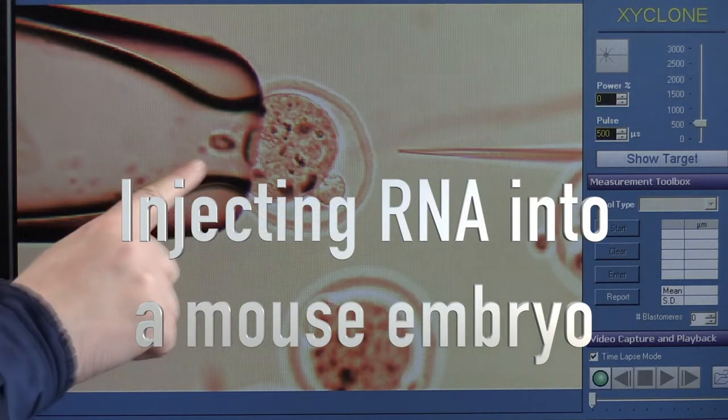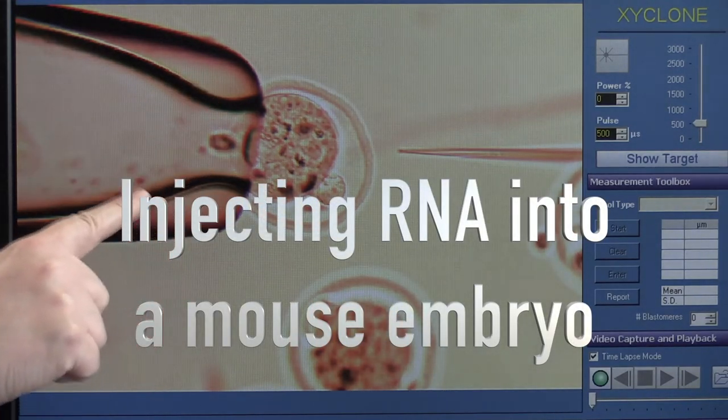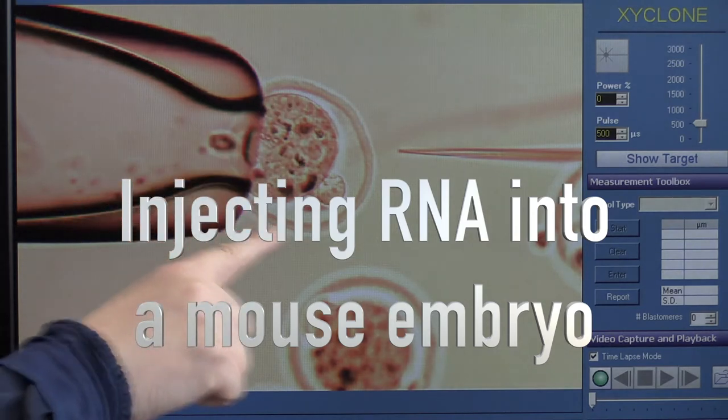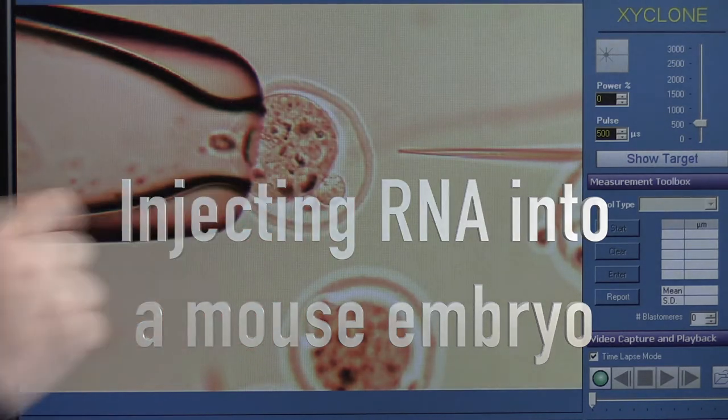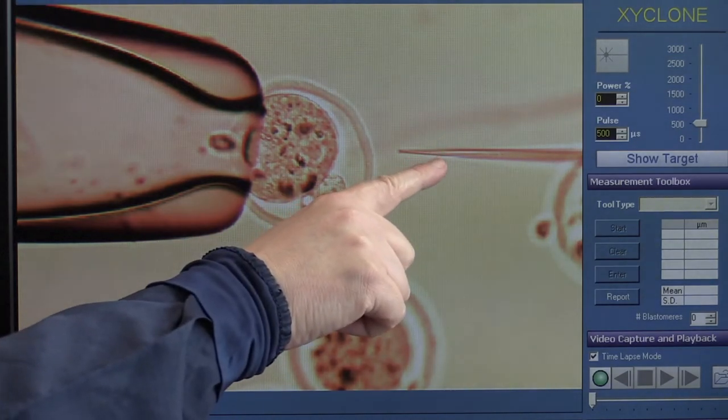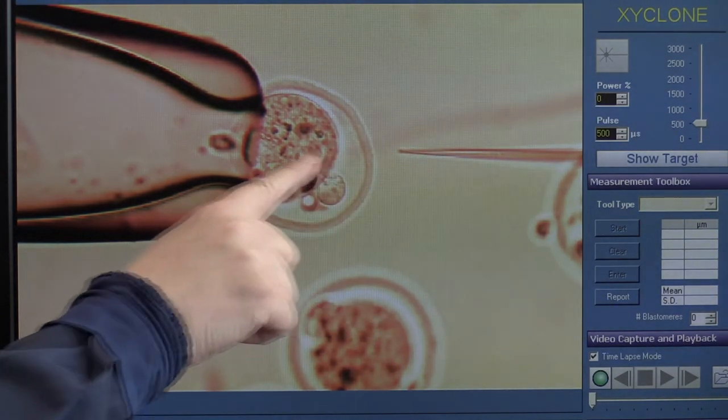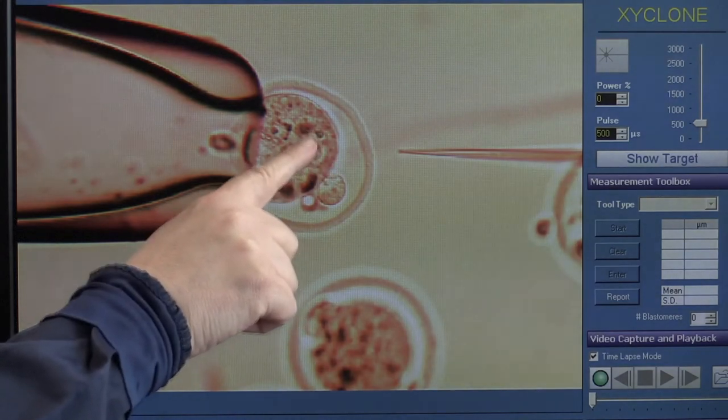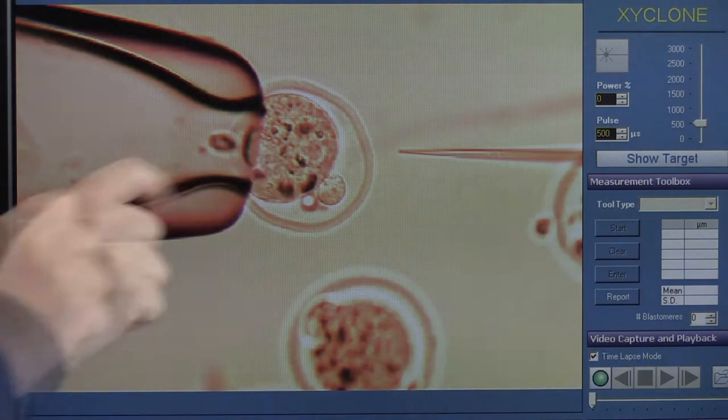This is a holding pipette about 100 micrometres wide. This is the mouse embryo. It's not visible by the naked eye. This is the needle with the altered RNA in it. I'm going to inject the mouse embryo to alter the genome of this embryo.